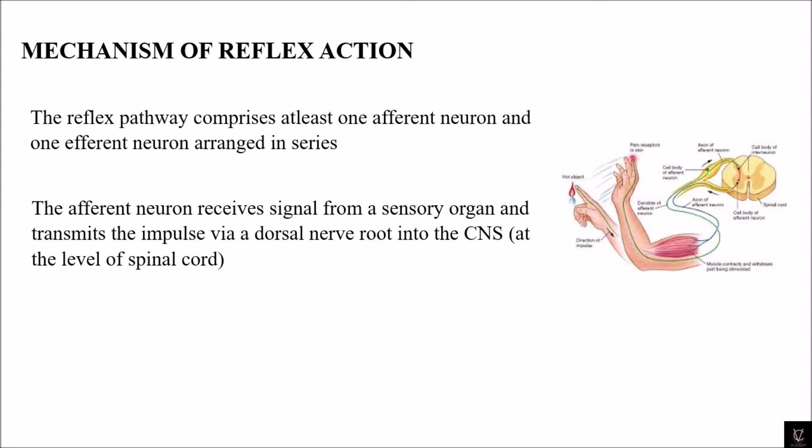The afferent neuron receives the signal from the sensory organ. When we touch a hot object or tap on a sharp object, these signals are received by the afferent neuron and transmitted to the CNS via the dorsal nerve root.